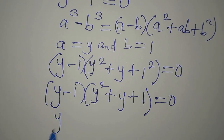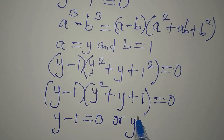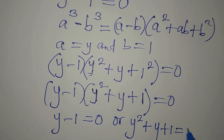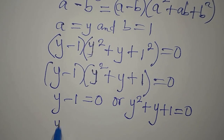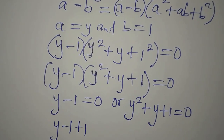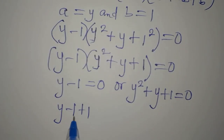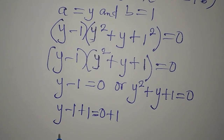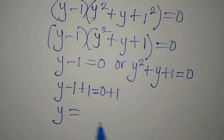We are multiplying these two factors to get zero, which means either y minus 1 equals zero or y squared plus y plus 1 equals zero. From y minus 1 equals zero, we add 1 — the additive inverse of minus 1 — to both sides. On the other side we have 0 plus 1, so y equals 1.